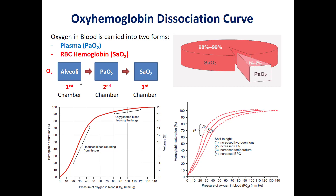Another important point is that when CO2 combines with water, it forms an acidic compound. By removing CO2 from our blood and replacing it with oxygen, we preserve the pH of our blood, keeping it within a neutral range rather than acidic.